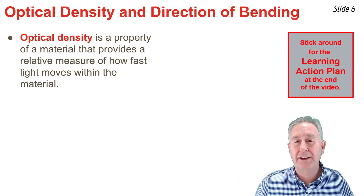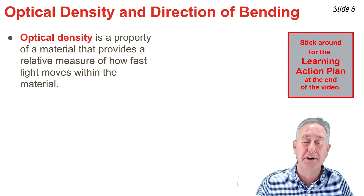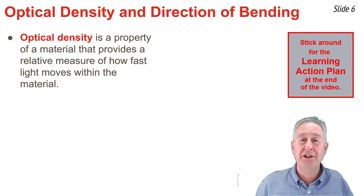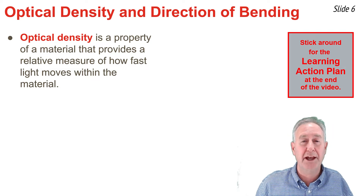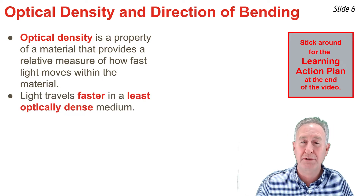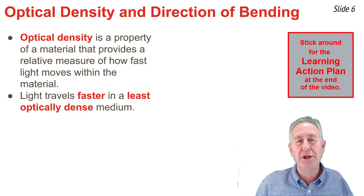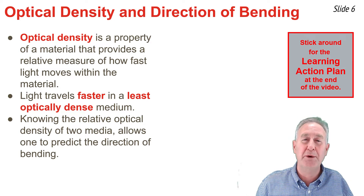So far, we've seen how to predict the direction that light will bend when you know the relative speed of light within the two materials on opposite sides of the boundary. But what if you don't have speed information, but instead have optical density information? Optical density is a property of a material that reflects how fast light will be traveling in that material. The rule is that light travels fastest in the materials that are least optically dense.